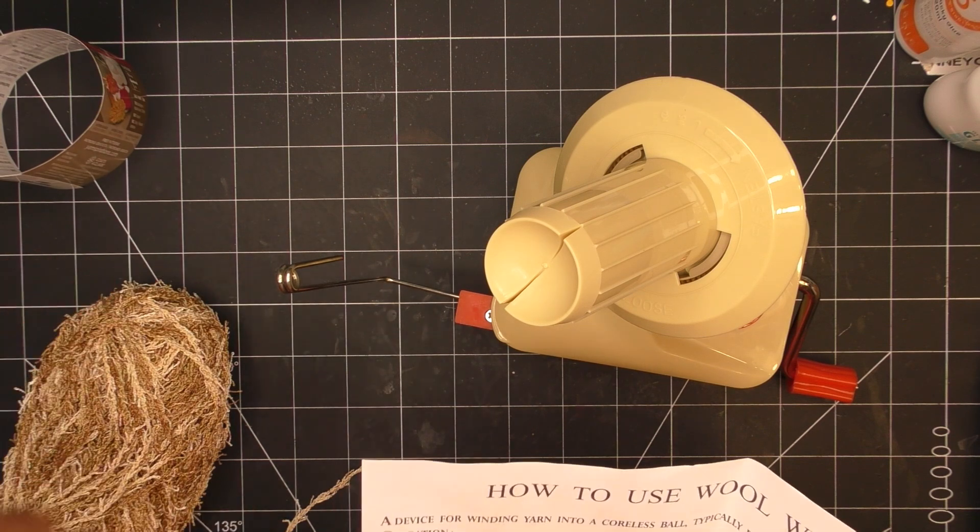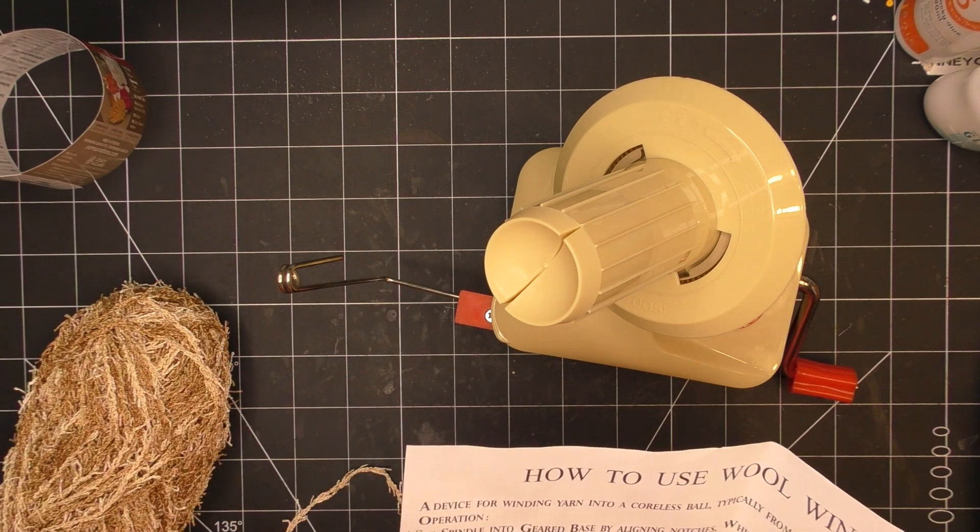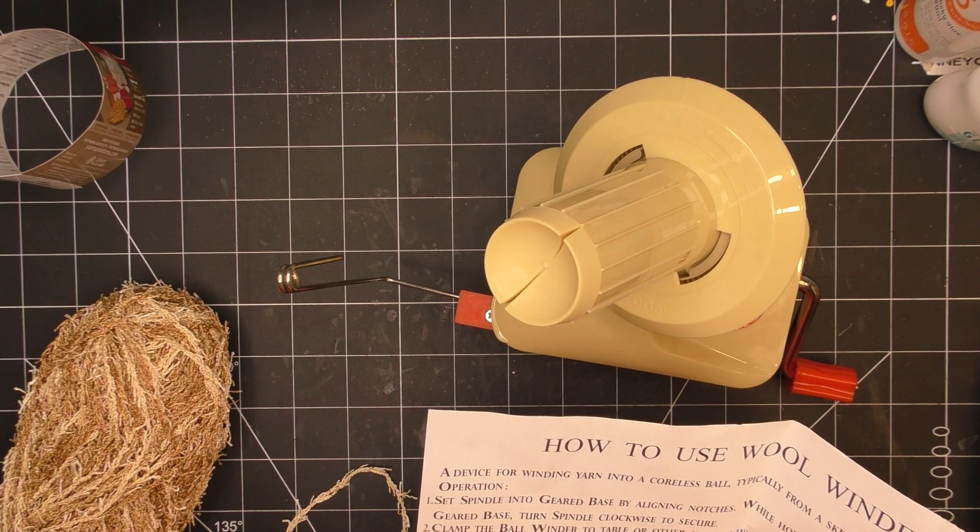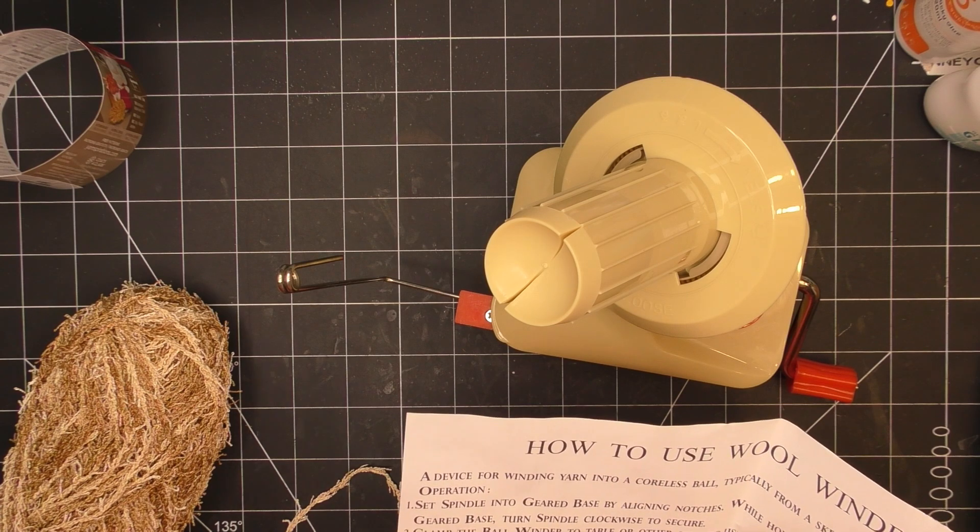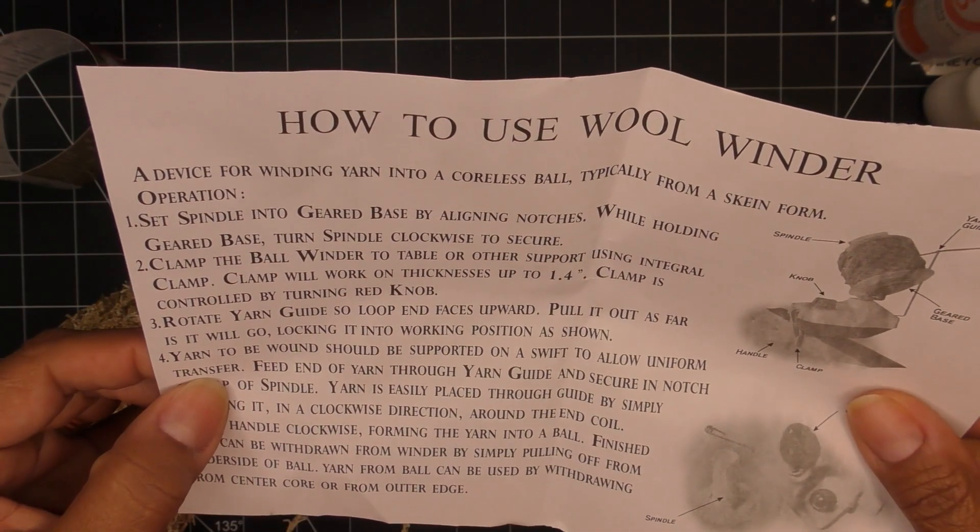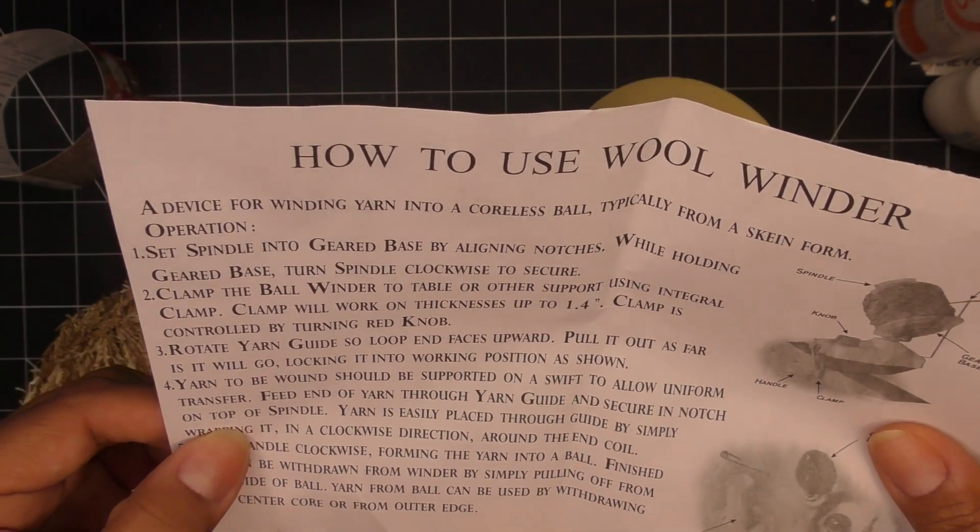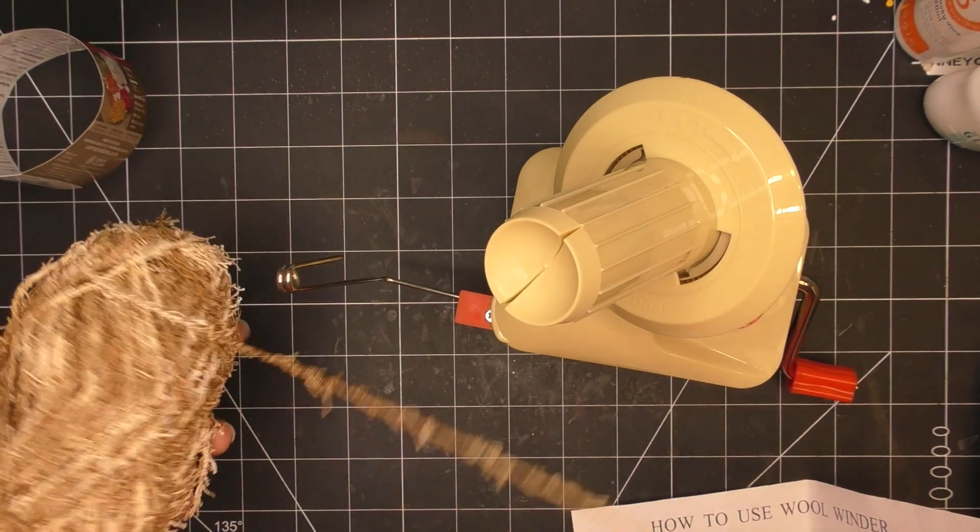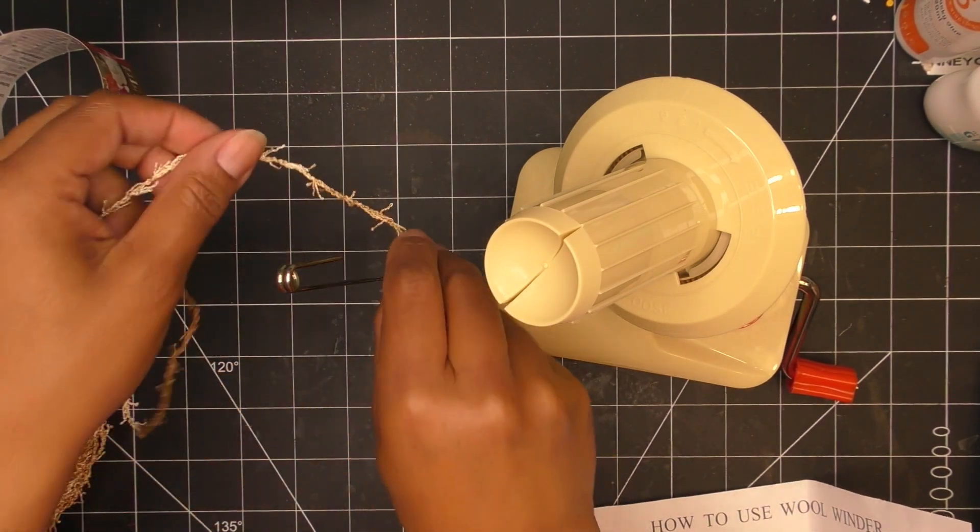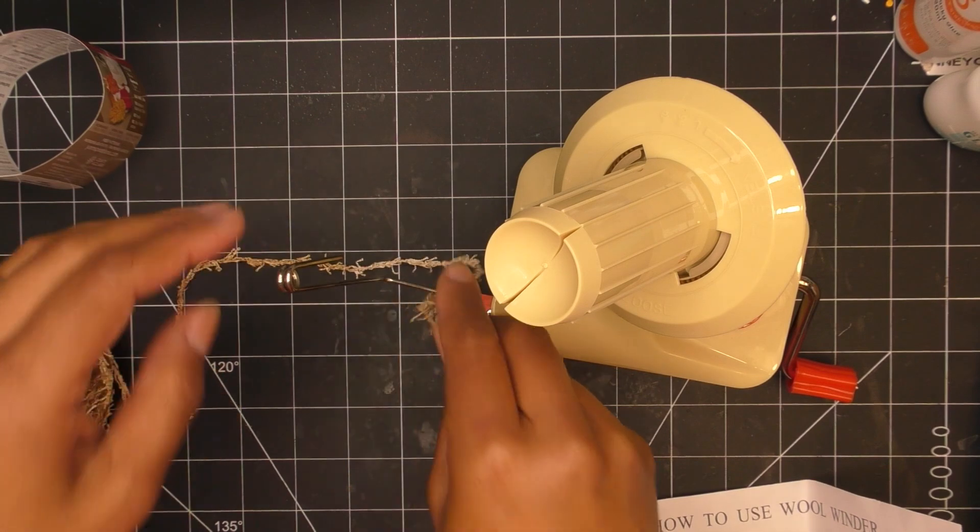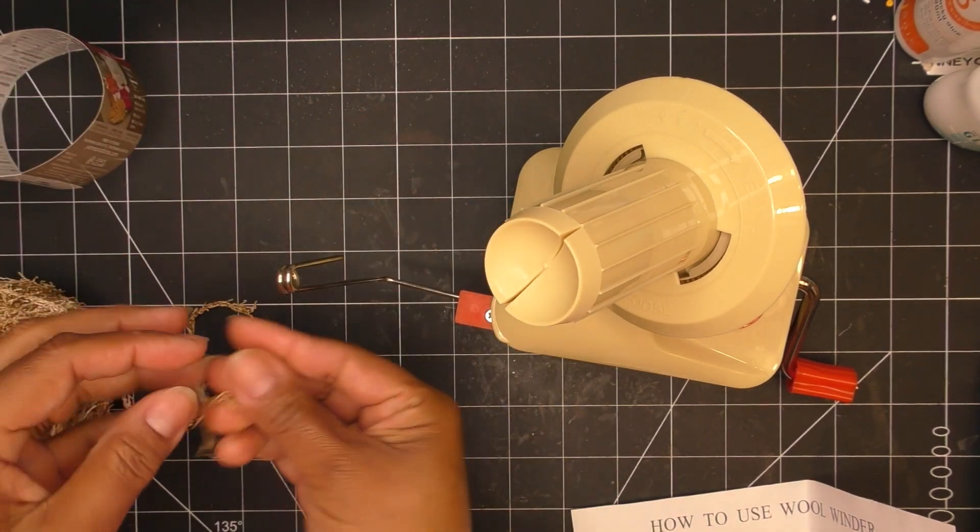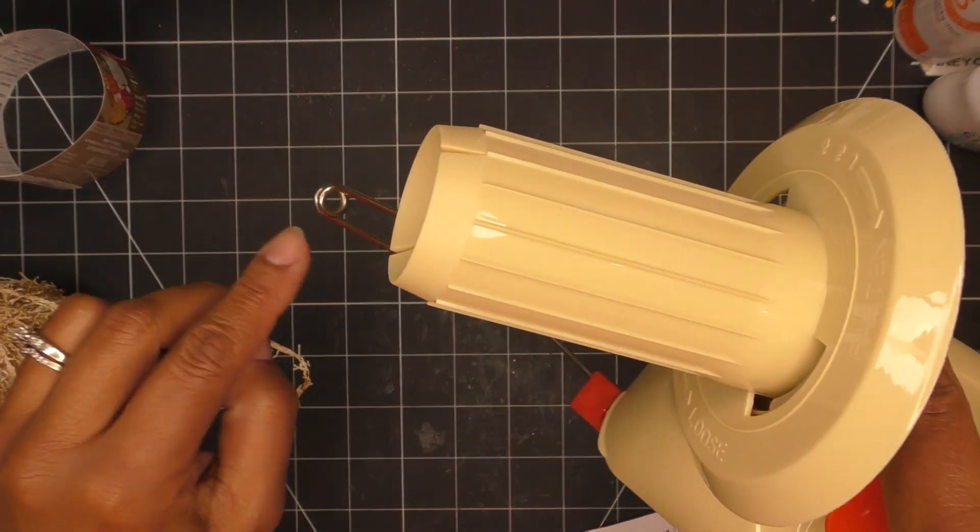Loop end faces upward, pull it out as far as it will go, locking it into working position as shown. Yarn to be wound should be supported on a swift to allow uniform transfer. I don't know what a swift is. Feed end of yarn through yarn guide and secure a notch on top of spindle.